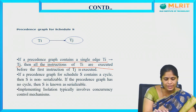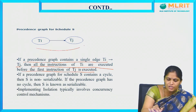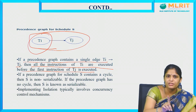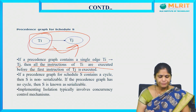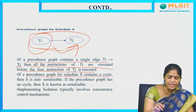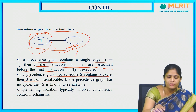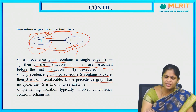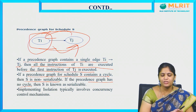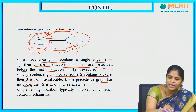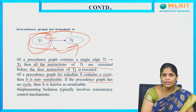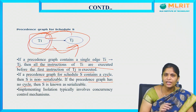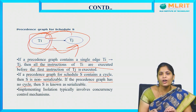If a precedence graph contains a single edge TI tends to TJ, then all instructions of TI are executed before the first instruction of TJ. By seeing this precedence graph, we can say all operations in TI are executed first, then only TJ will be executed. If a precedence graph of a schedule contains a cycle, then it is non-serializable. If a precedence graph has no cycle, then it is a serializable schedule — because after completion of TI, only then TJ executes, making it a serial schedule. If it contains a cycle, it becomes interleaved transactions, which is a non-serial schedule.